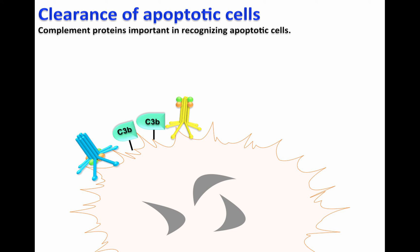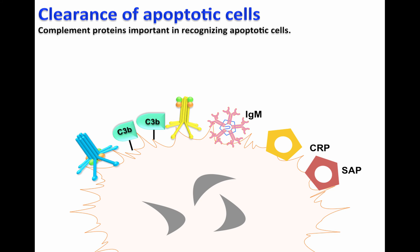Apoptotic cells are also recognized by non-complement proteins, such as autoantibodies, IgM in nature, C-reactive protein, serum amyloid P or SAP, and pentraxins. As shown in previous videos, CRP and IgM can also be recognized by C1Q, leading to activation of the classical pathway of the complement system.